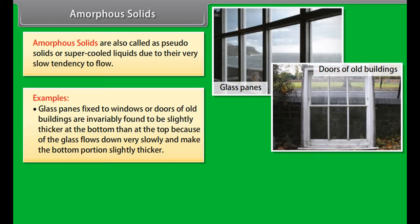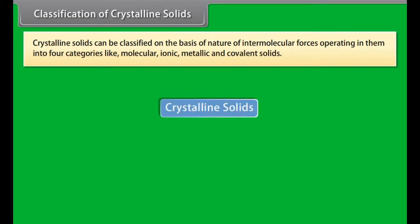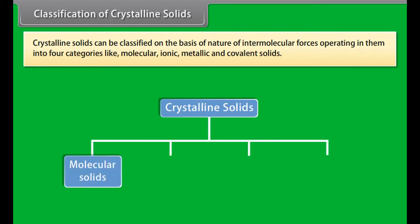Amorphous solids are also called pseudo solids or super cooled liquids due to their very slow tendency to flow. For example, glass panes fixed to windows or doors of old buildings are invariably found to be slightly thicker at the bottom than at the top, because the glass flows down very slowly and makes the bottom portion slightly thicker.